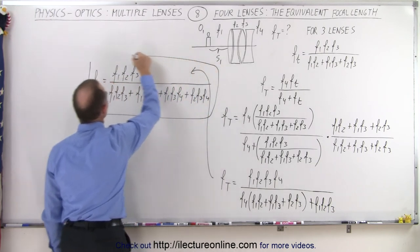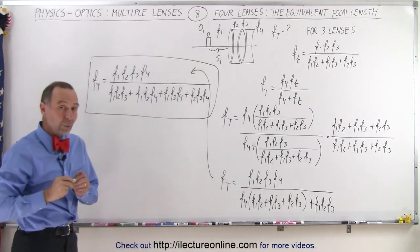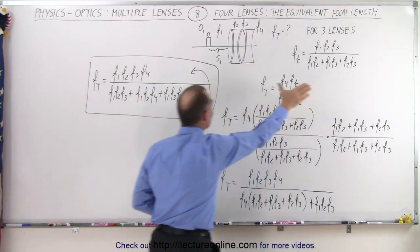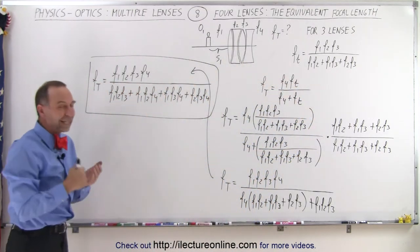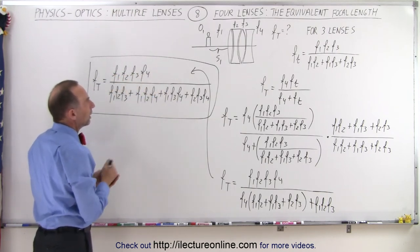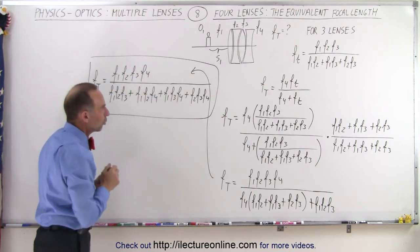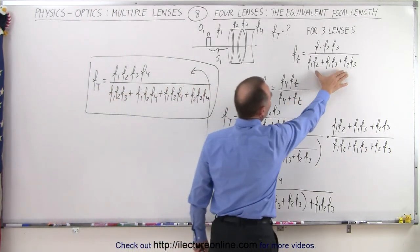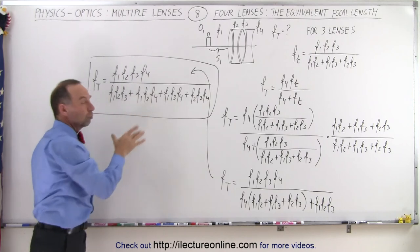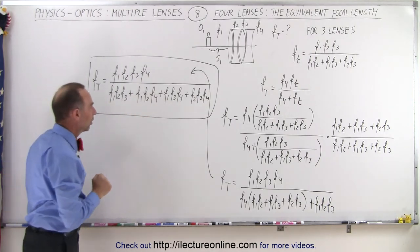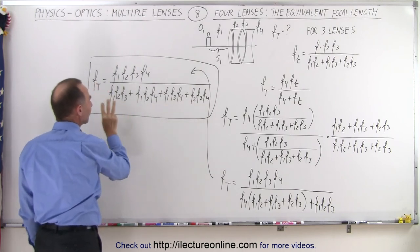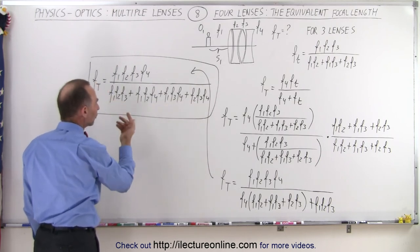We'll see in just a moment why. So now we went from a three-lens system and the equivalent focal length for that to a four-lens system. Notice that in each case, it's always going to be the product of the focal lengths in the numerator, and then in the denominator we'll end up with a number of terms. Here we end up with three terms in the denominator for three lenses. Here we end up with four terms in the denominator for four lenses. Notice that in each term of the four terms, you only have three focal lengths, and they kind of rotate.